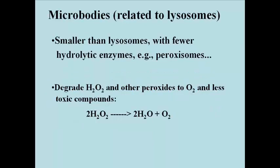The other organelles that arise from RER and Golgi vesicles, and that contain packaged proteins, are collectively called microbodies. These are smaller than lysosomes usually, and contain fewer different hydrolytic enzymes.